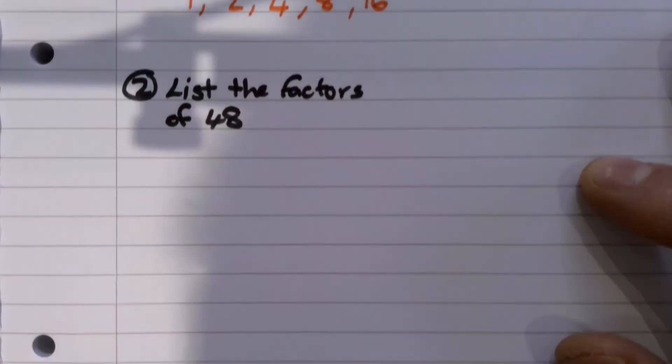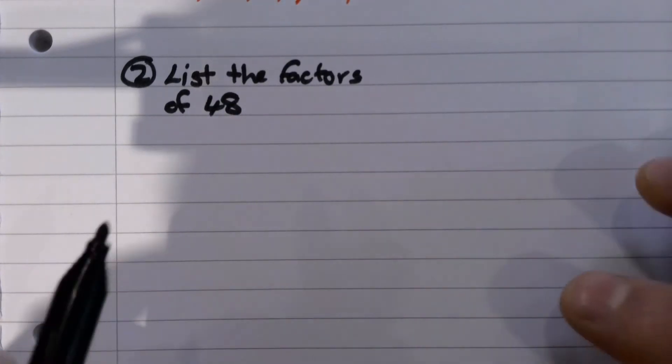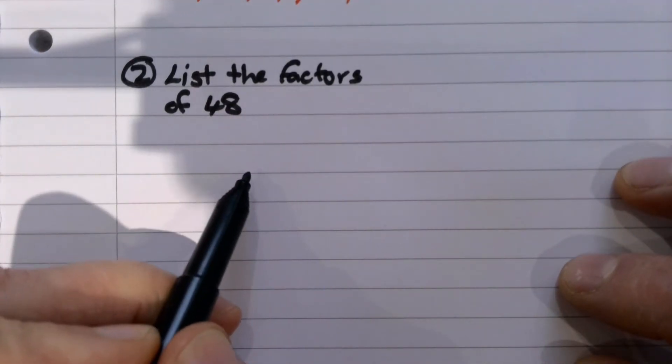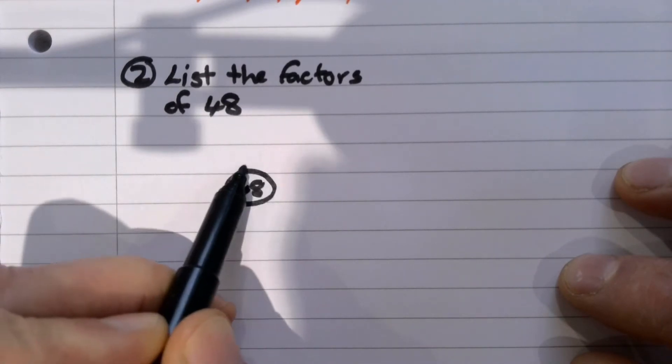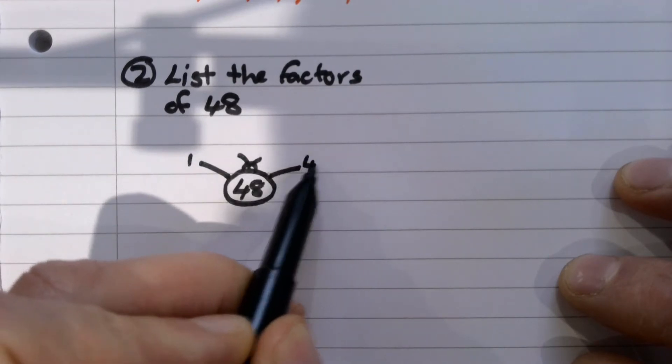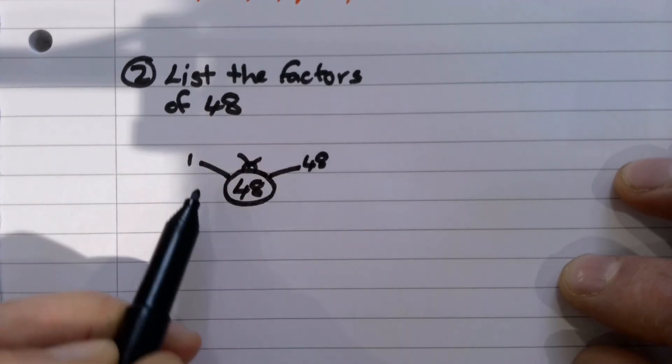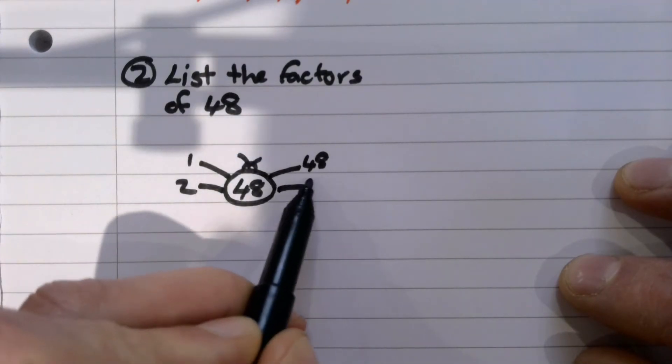So second example, we're going to list the factors of 48. So now we just need to write a factor bug for 48. And start that one off. So that's going to be one times 48. Definitely 48. Does two go in? Yeah, two, 24.